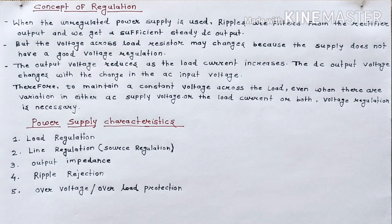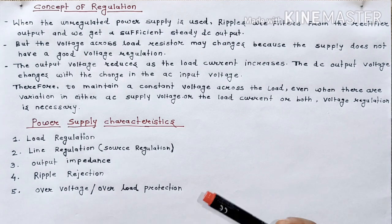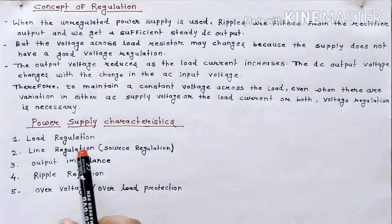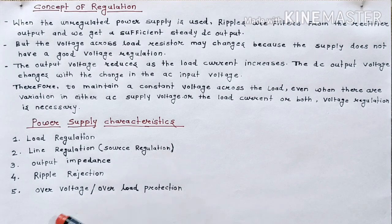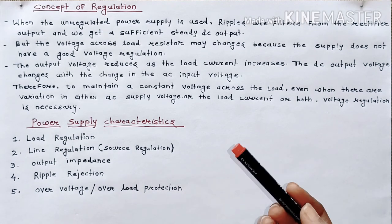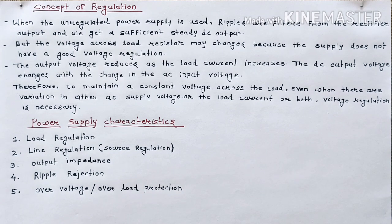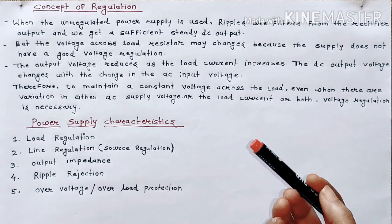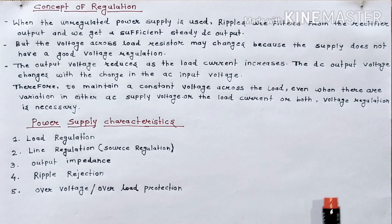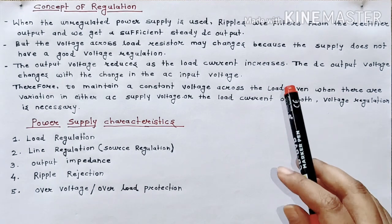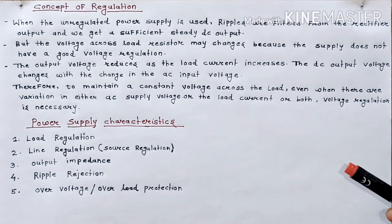The more you focus on these characteristics, the better power supply you will be able to build. We are going to discuss these characteristics in detail in the next video lecture. These characteristics also appear in exams. The most commonly asked topics are load regulation and line regulation, also called source regulation — asked for 3 marks. Otherwise, questions like 'explain the characteristics of power supply' are also asked for 3 or 4 marks, requiring you to explain 3 or 4 characteristics. This is an important question in this chapter. Hope you are clear with this concept. Like the video, share with your friends, subscribe to the channel, and thanks for watching.